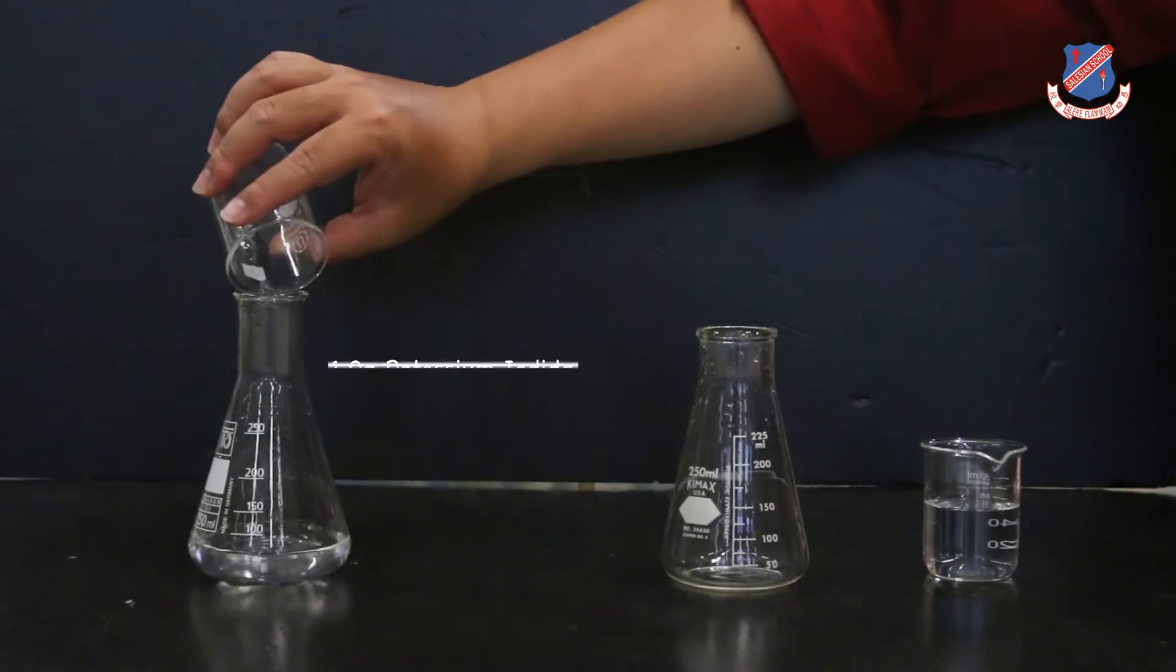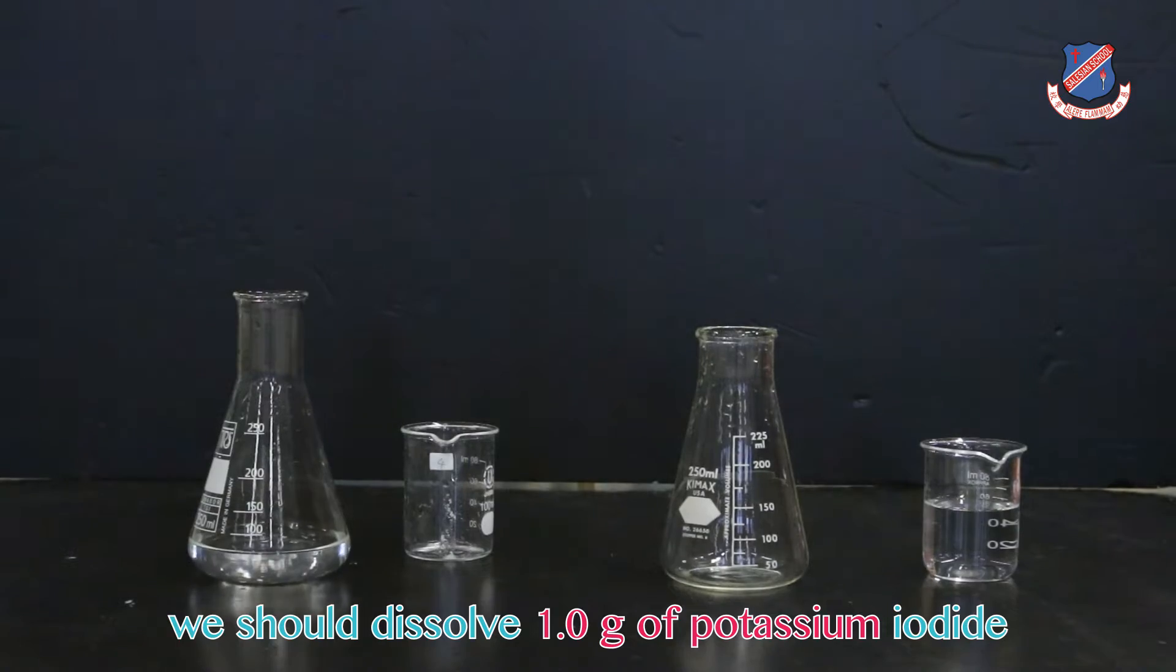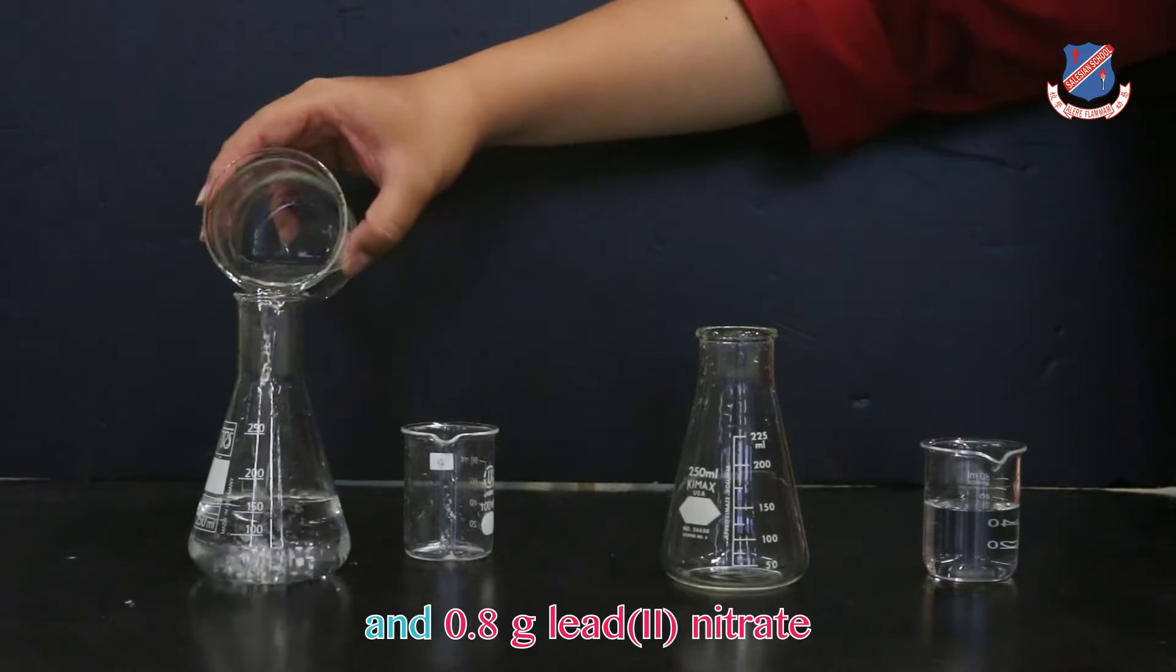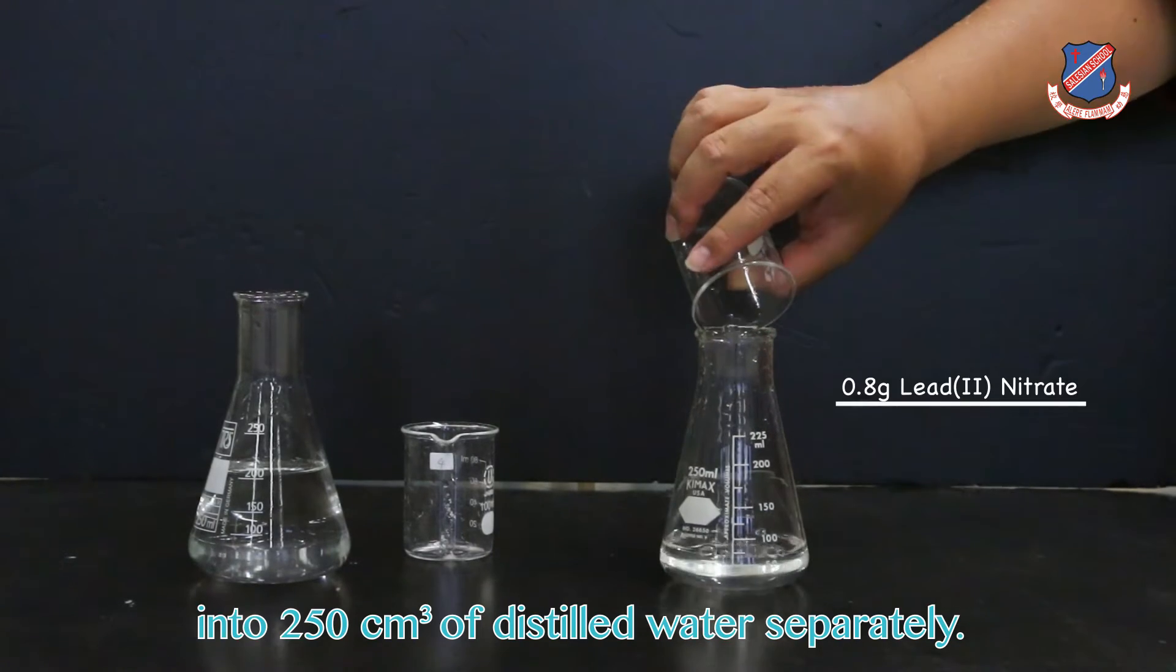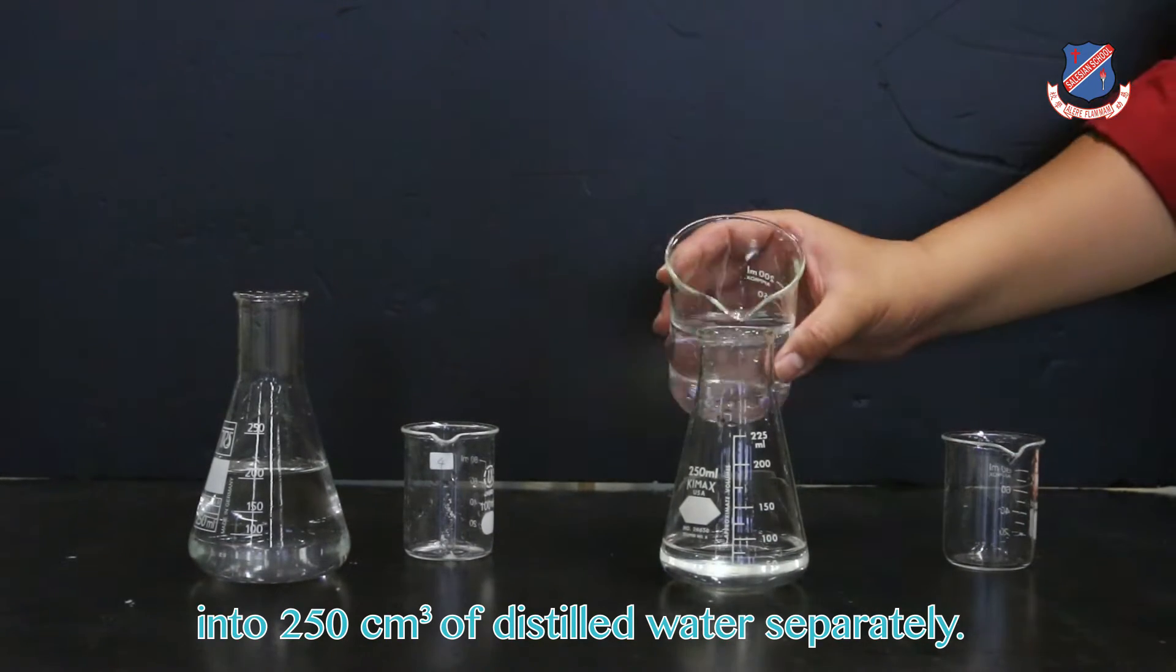To begin with, we should dissolve 1 gram of potassium iodide and 0.8 gram lead(II) nitrate into 250 cm³ of distilled water separately.